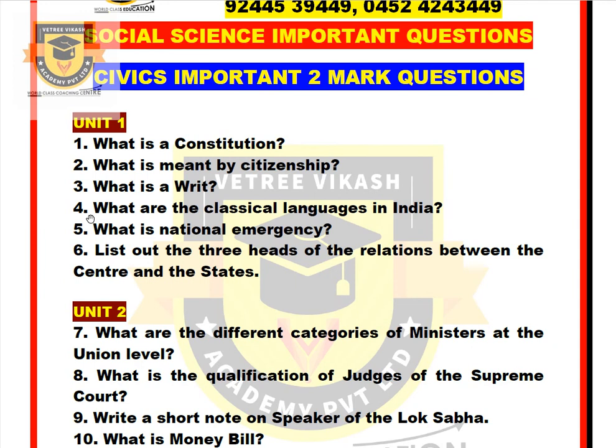Okay students, in Unit 1 I said the first question: What is a constitution? Second one: What is meant by citizenship? Third one: What is a writ? Fourth one: What are the classical languages in India? Fifth one: What is national emergency? Sixth one: List out the 3 heads of the relations between the centre and states.